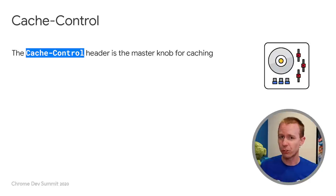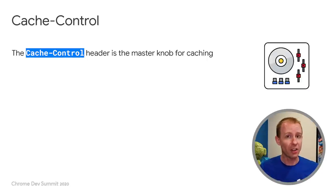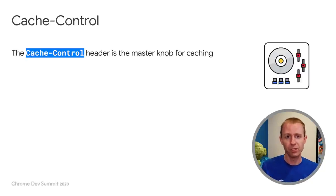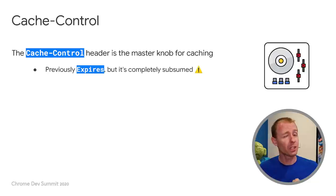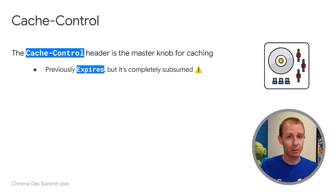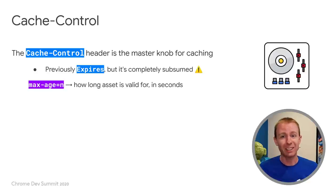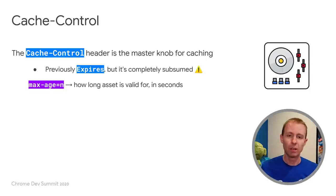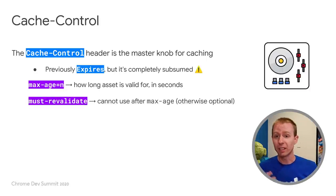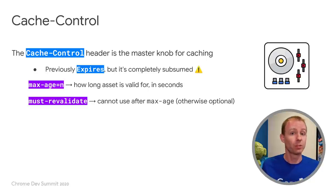Let's talk about the Cache-Control HTTP header. It's really the master knob that we have as web developers to control how browsers cache assets and how they'll be used for the second load. I'll give you a few suggestions of how to use this and talk through all the different options. MaxAge tells a browser how long they can hold onto a file after the time it was served. MustRevalidate says after that same time, you really can't use this file — it makes the MaxAge a strict requirement as opposed to a loose one.